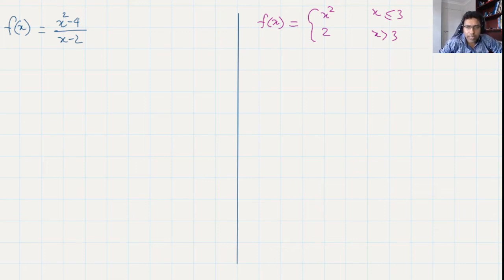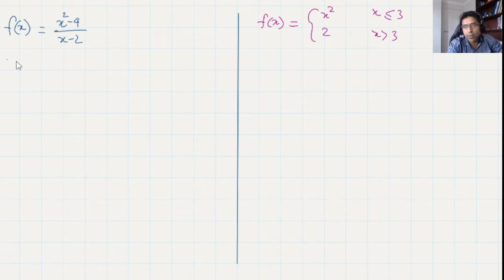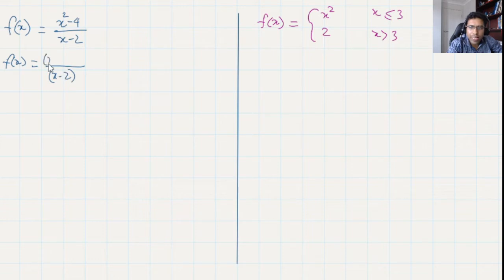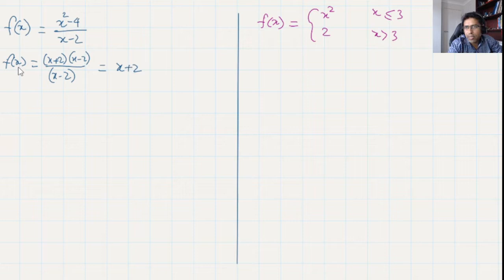Here we have another example: f(x) = (x² - 4) / (x - 2). If I ask you to plot it, we can first simplify it. Factorizing the numerator gives (x + 2)(x - 2), and the (x - 2) terms cancel, leaving us with f(x) = x + 2, which means y = x + 2.